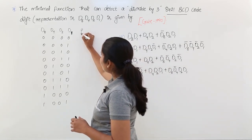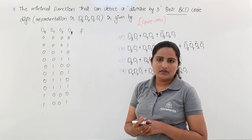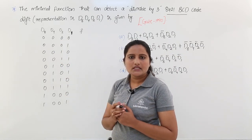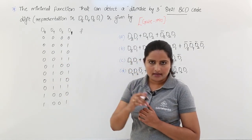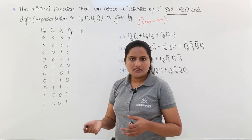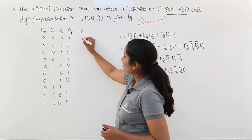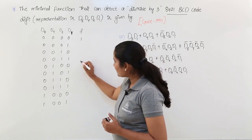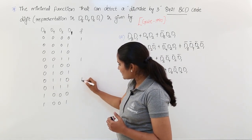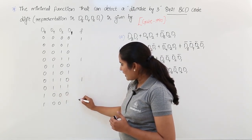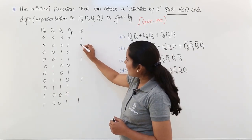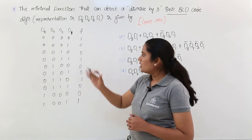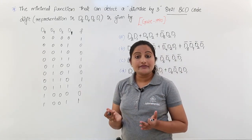The functionality we need to define is a divisible-by-3 circuit. Whatever digit value is divisible by 3, the function output should be 1 there. So: 0 is divisible by 3 (0 is divisible by any number), 3 is divisible by 3, 6 is divisible by 3, and 9 is divisible by 3. At all remaining places the function is 0.